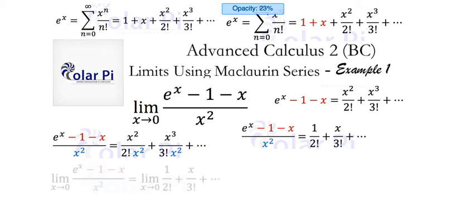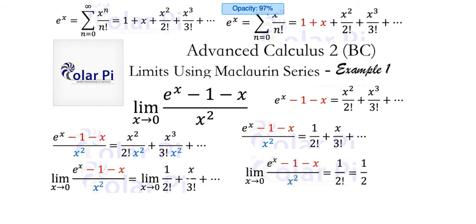So when we take the limit as x goes to zero, we see that on the right side here in the infinite sum, all of the terms except for the very first term have x's in them. So they all turn to zero when x goes to zero. And therefore, when x goes to zero, the limit is going to be one over two factorial, also known as one half.